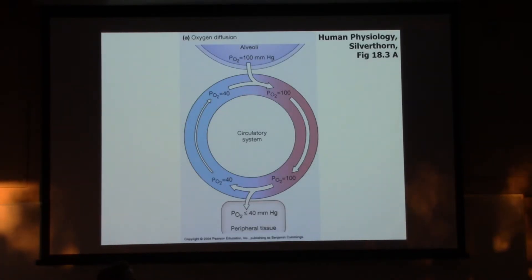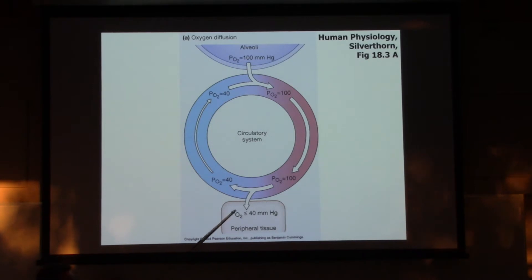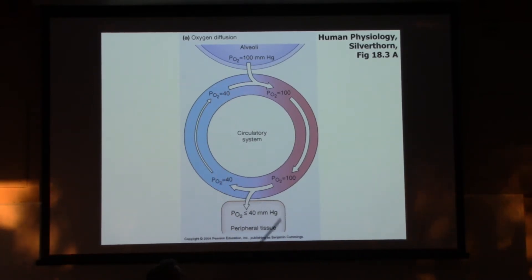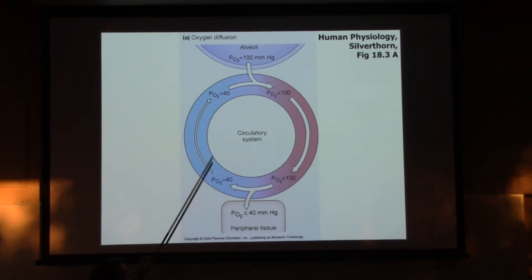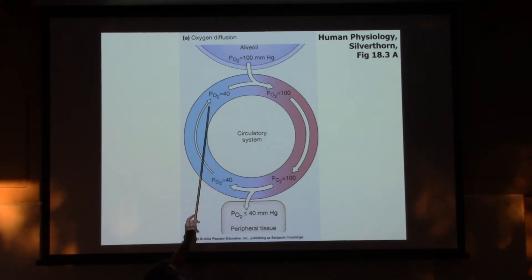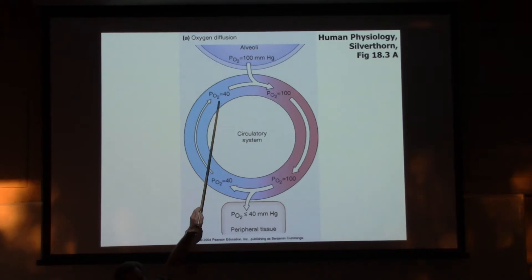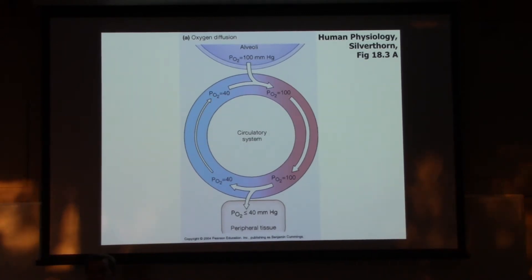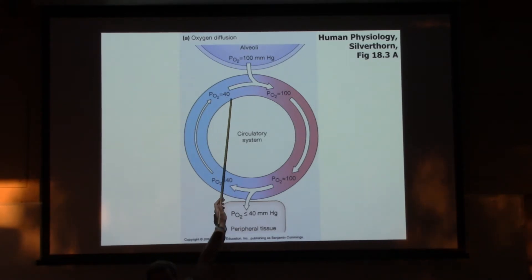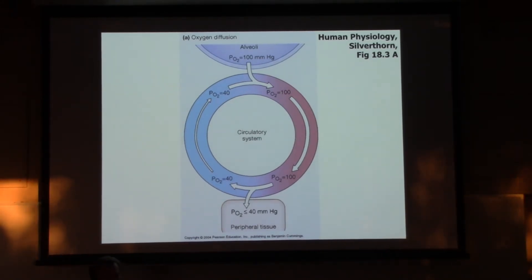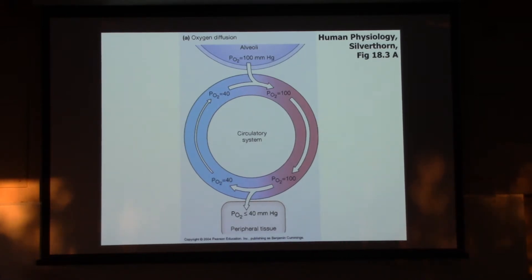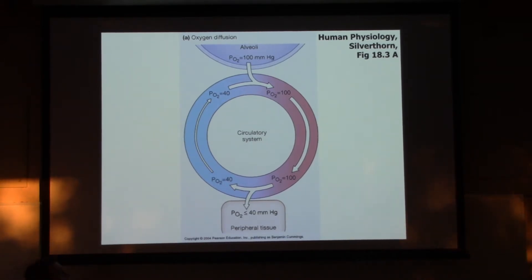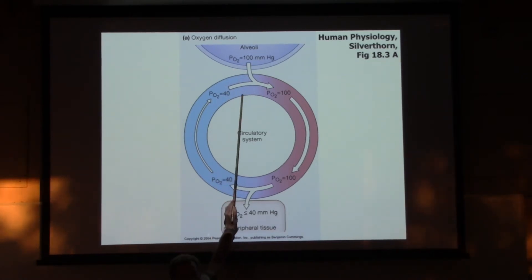Here we've got our cardiovascular system. Down here represents the systemic capillaries, with tissues that use oxygen. Our alveoli at the top is where we add oxygen. Blood coming back into our lungs might have a partial pressure of oxygen - P sub O2 - of 40 mmHg. The partial pressure of oxygen in the alveoli might be at 100 mmHg. That's a pressure gradient, so oxygen will diffuse from the high pressure to the low pressure, loading up that blood.